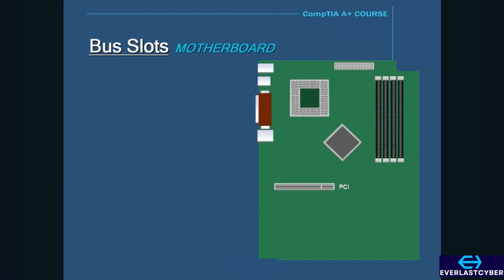As computers got faster, a lot of people were using their computers for higher-end graphics applications such as gaming. As computers became more graphically oriented, the PCI slot was lagging in delivering computer graphics data. For this purpose, the AGP slot was developed.